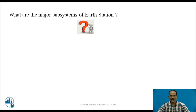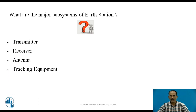The major subsystems of the Earth Station are the Transmitter, Receiver, Antenna, and Tracking Equipment. The Transmitter is used to transmit signals from the Earth Station to the satellite, and the Receiver is used to receive signals from the satellite to the Earth Station. The Antenna radiates and also receives electromagnetic waves from the satellite. The Tracking Equipment is used to alter the position of the antenna — up, down, right, left — depending on the position of the satellite.